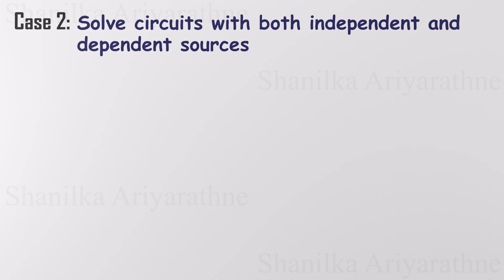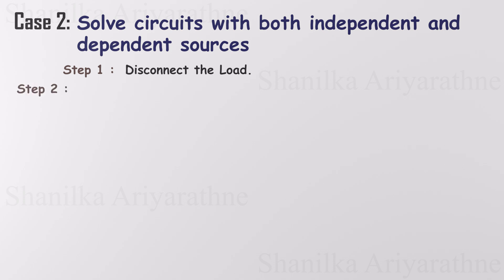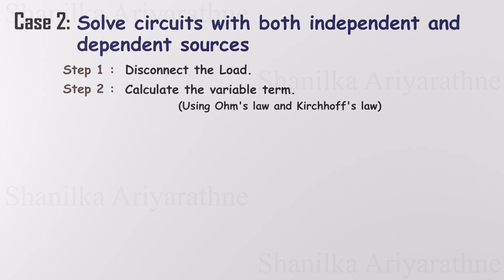To solve circuits with both independent and dependent sources using Thevenin's theorem, follow these structured steps. First, remove the load resistor to isolate the circuit and focus on finding the Thevenin equivalent across the load terminals. Next, use Ohm's law and Kirchhoff's laws to calculate the variable controlling the dependent sources. This is important because dependent sources rely on other circuit parameters.